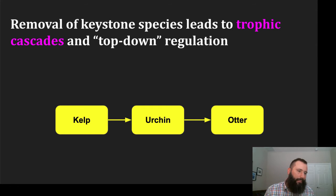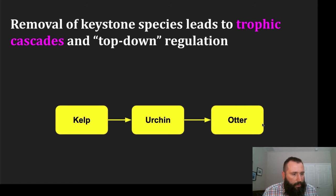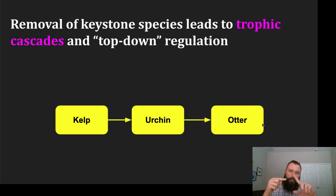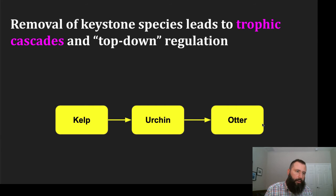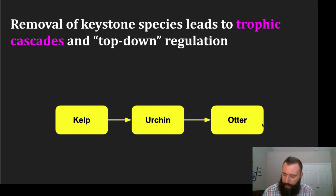If the otter is at the top of a trophic pyramid — a feeding pyramid — with producers at the base and the otter at the top, then the removal or addition of that otter is going to regulate the amounts of individuals throughout that trophic pyramid. That removal or addition is called a trophic cascade. These direct and indirect changes will flow throughout all members of the community within the ecosystem.